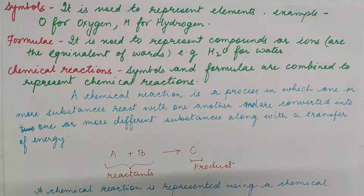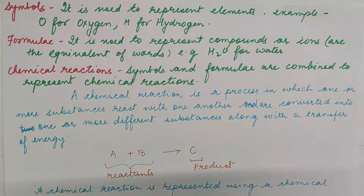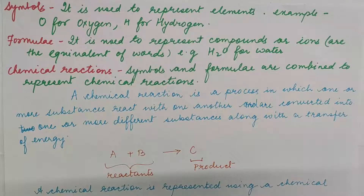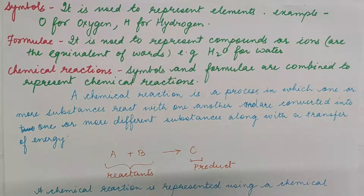Now children, you all are using English as a medium to understand and write things in your school. English is made up of different alphabets, and from those letters we make up words. When you grow up you learn to make sentences. Similarly, when we talk about the language of chemistry, we are talking about symbols, formulas, and chemical reactions.